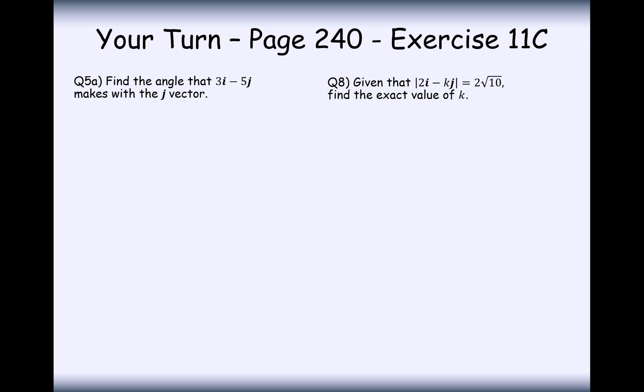Okay then, let's have a go at these two questions. What we need to do is find the angle between the vector 3i minus 5j makes with the j vector. It's not clear whether it's positive or negative, so I'll just take it as the angle that's less than 90 degrees.